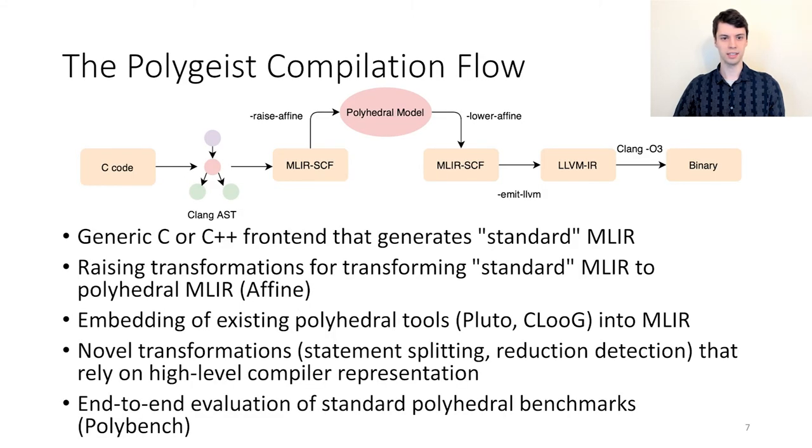To create this end-to-end compilation flow, Polygeist contains several components. Polygeist begins as a new Clang-based C and C++ front-end for MLIR that simultaneously preserves the program's high-level structure. Unlike most existing tools used in the polyhedral community, the Polygeist front-end handles entire C or C++ programs, not just the parts of the program that are representable within the polyhedral model.